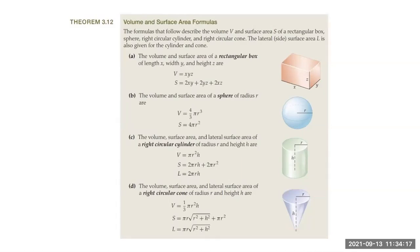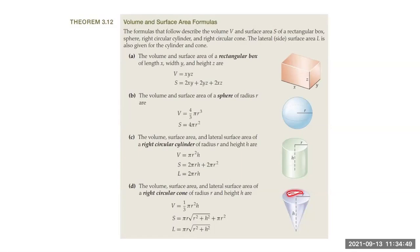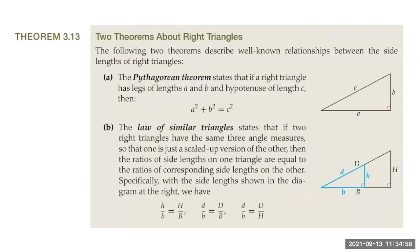For a cone with height h and base radius r, the volume is (1/3)πr²h. The total surface area is π r√(r² + h²) + πr², and the lateral area — the area of the side without the base — is πr√(r² + h²).